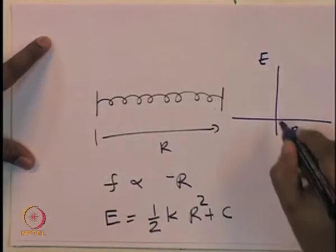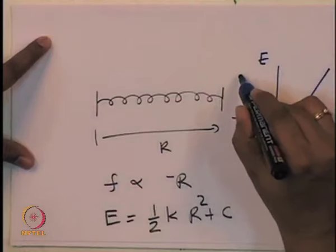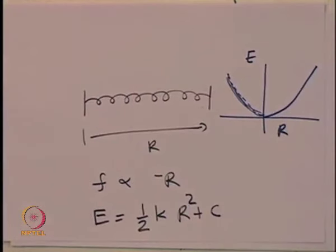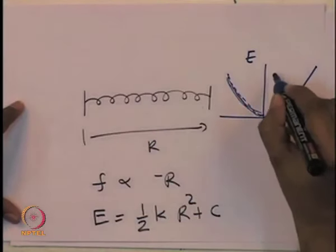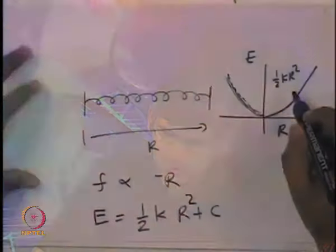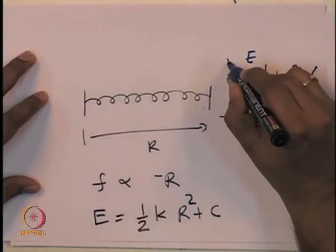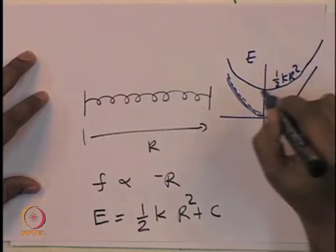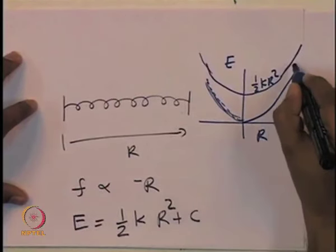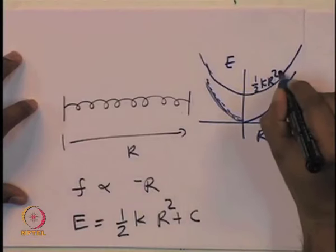Let us quickly plot this. Plotting energy versus r, you get a parabola: ½kr². If you add a constant to this, the curve shifts but the shape does not change — it is just ½kr² plus a constant. Both curves are parallel parabolas.